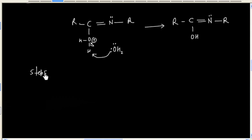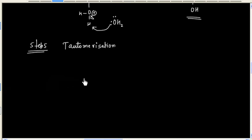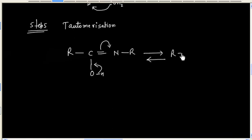In the next step we can have tautomerization so that final product is amide. So this bond goes here, this goes here and nitrogen will have a hydrogen. So this is simply tautomerization.